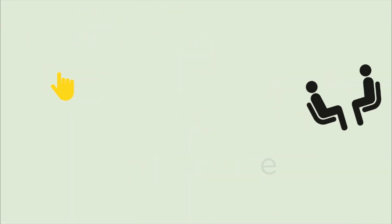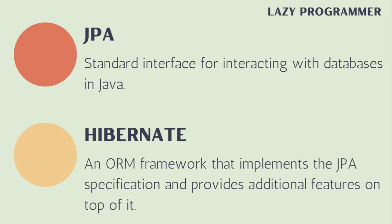Now let's see the key differences between JPA and Hibernate. JPA is a standard interface for interacting with databases in Java. Hibernate, on the other hand, is an ORM framework that implements the JPA specification and provides additional features on top of it. We can think of JPA as an interface where all the operations are defined — just like an interface where we only define abstract method names. Hibernate is like the implementation class, where those operations are actually written.